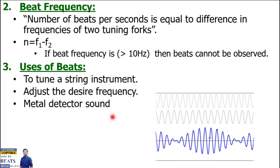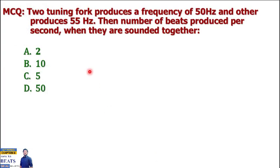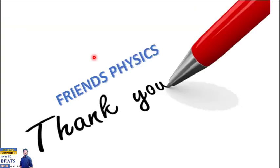Here's a simple question: two tuning forks produce frequencies of 50 hertz and 55 hertz. The number of beats produced per second? Very simple answer - the frequency difference is 5 hertz, so 5 hertz will be the right answer. So dear students, this was the topic of beats. The next lecture will be ready soon. Allah Hafiz, thank you.